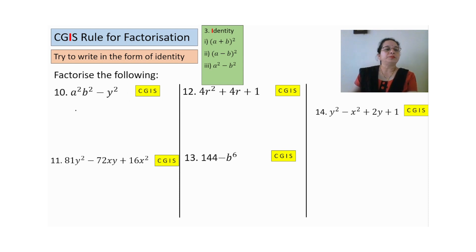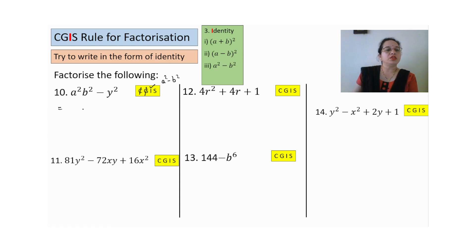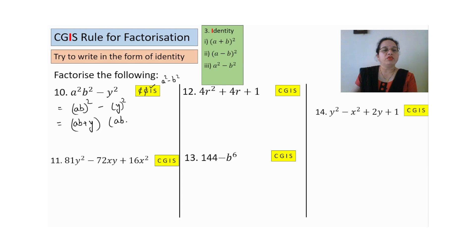A few more examples — factorize. Common not possible, grouping not possible, we go for identity with only two terms — a²-b². Write the first term as (ab)² minus (y)². Once we add and once we subtract. This is the answer.